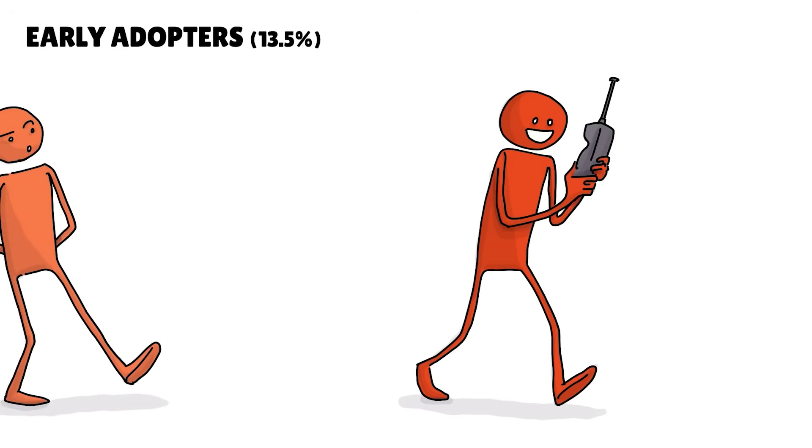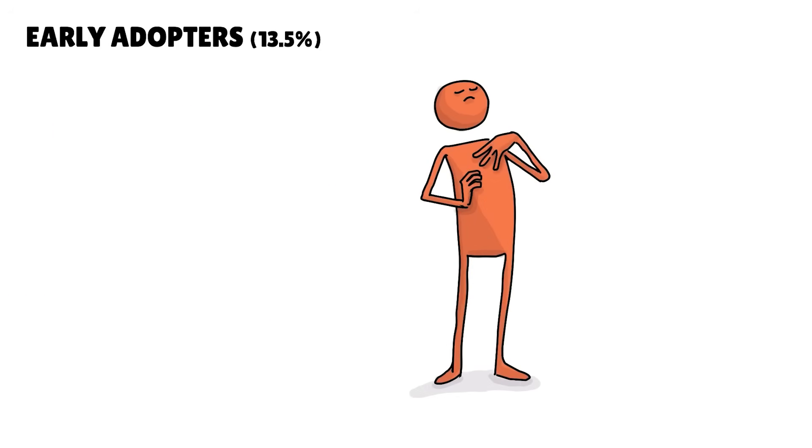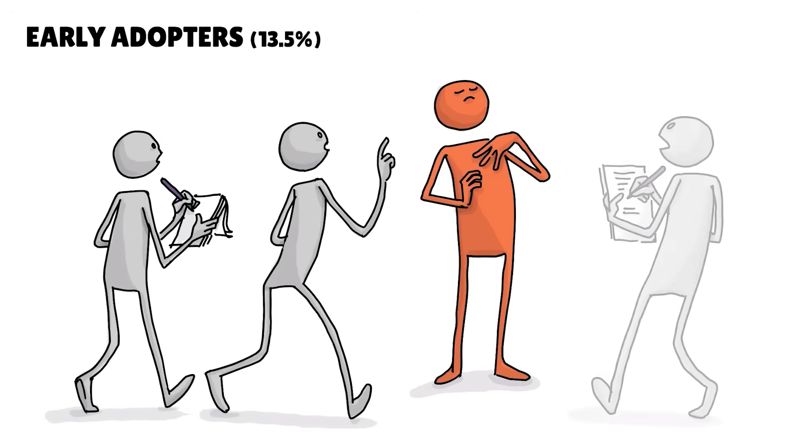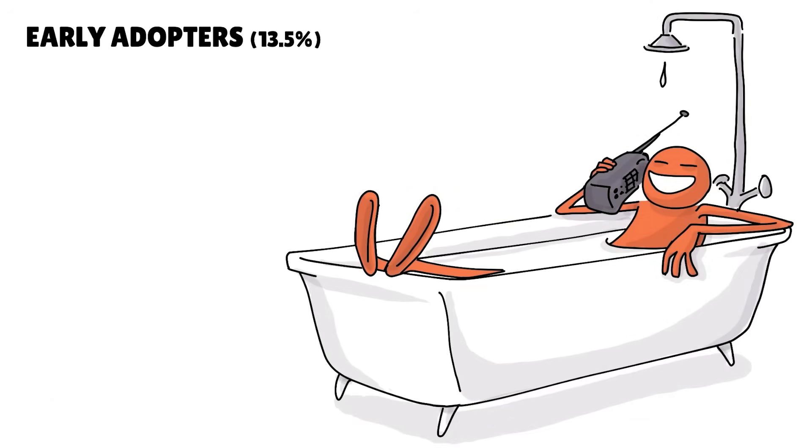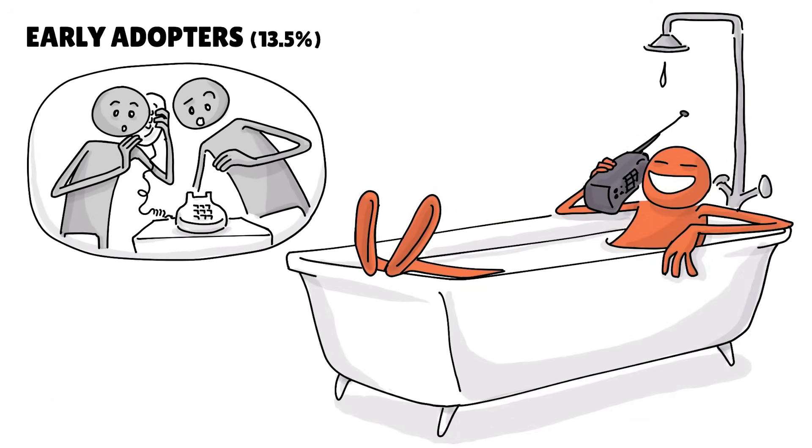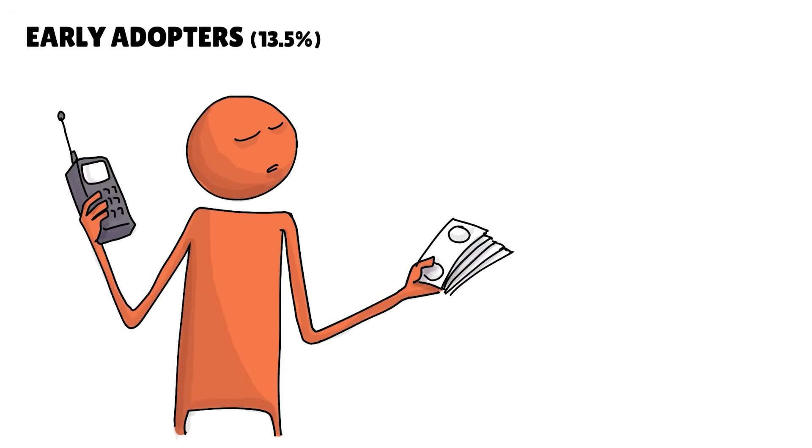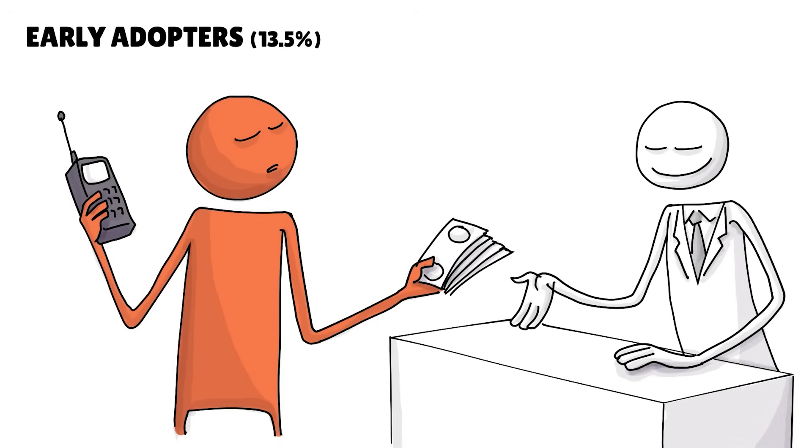Early adopters follow the innovators. They are respected, serve as opinion leaders and carefully consider anything new before buying into it. Once they do, early adopters like to share their advice. Many of them got a $1,000 cell phone by 1996.